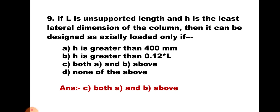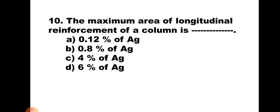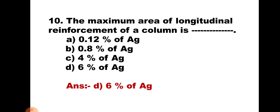Question number 10. The maximum area of longitudinal reinforcement of a column is: A) 0.12% of Ag, B) 0.8% of Ag, C) 4% of Ag, or D) 6% of Ag. The maximum area of compression reinforcement is 6% of Ag. Hence the correct answer is D, 6% of Ag.